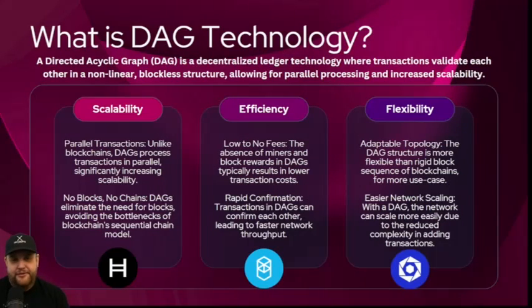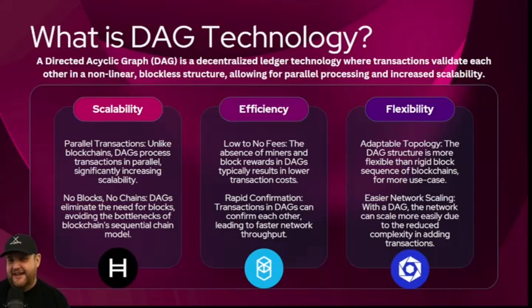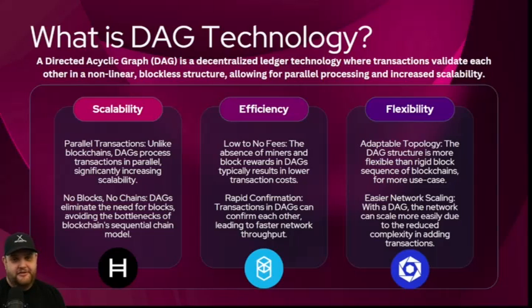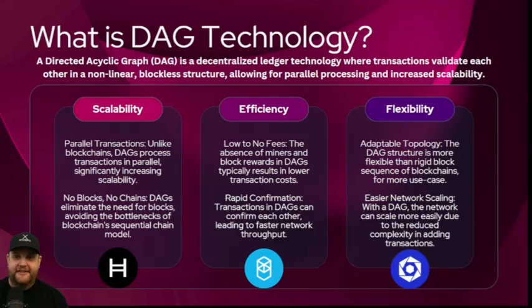Now that we understand what a blockchain is, what is a DAG? There are a lot of questions in the Zen community: is a DAG centralized? Is it not a blockchain? Does it not have the tenets of first principles? Well, it's basically just a data structure — a type of technology. It's a directed acyclic graph.